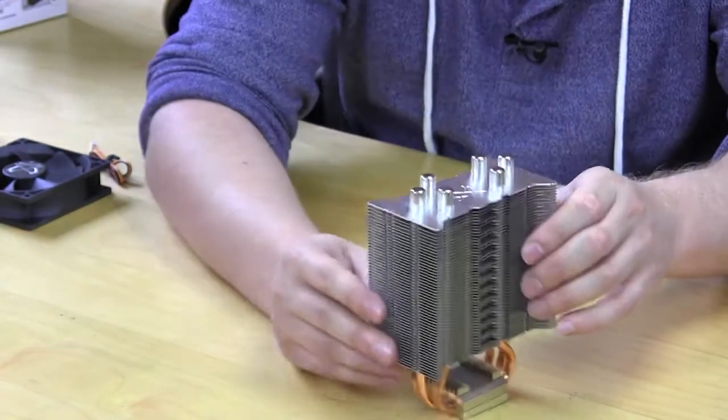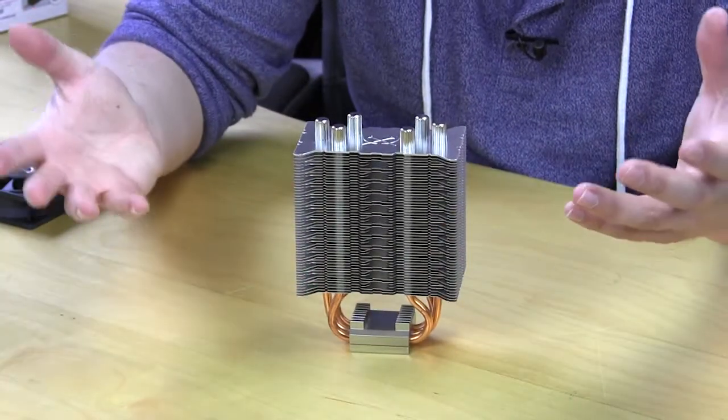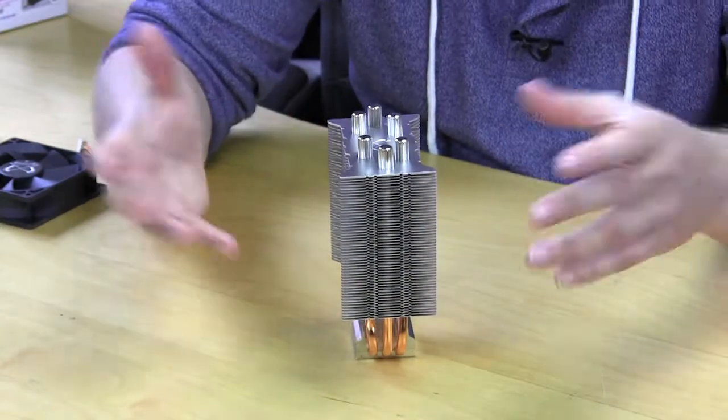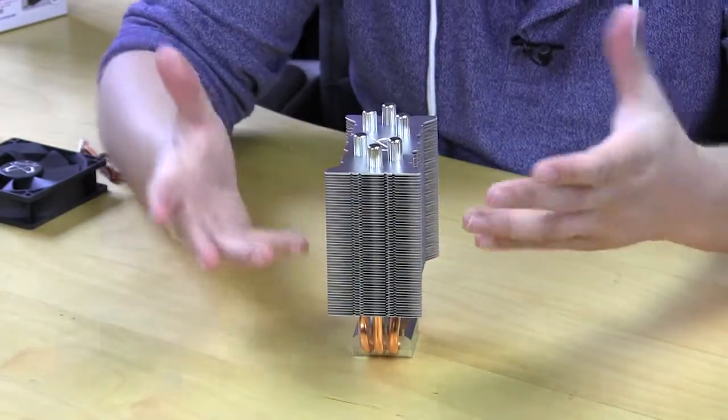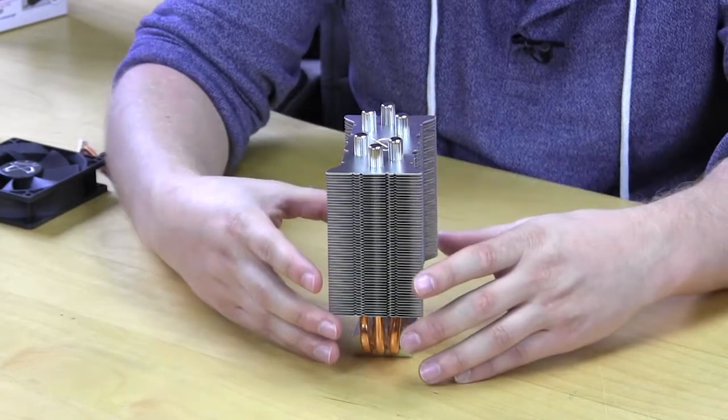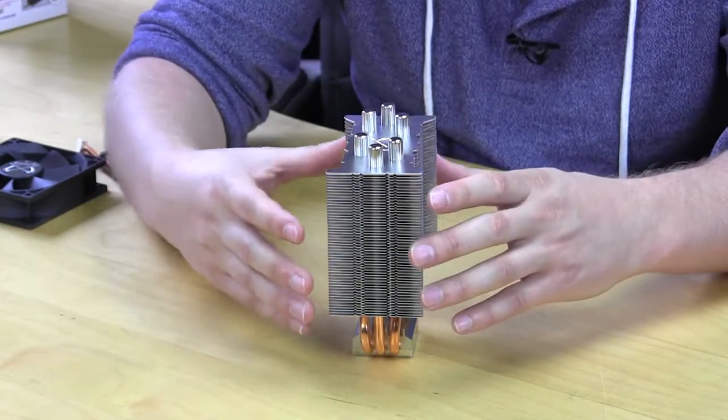And then we'll take a look at the cooler itself. So this is a tower cooler. If you're familiar with coolers, a tower cooler is just like what it says. It looks like a tower. It's a single tower cooler here. So we have our heat sink fins here, and then we have our heat pipes that come out of the base.